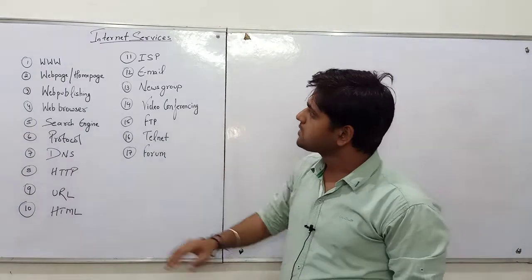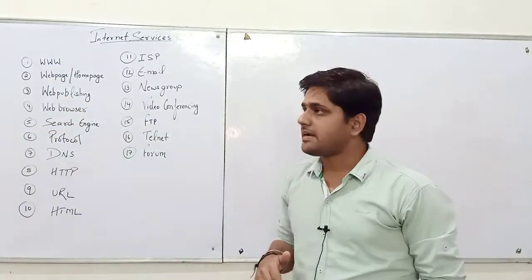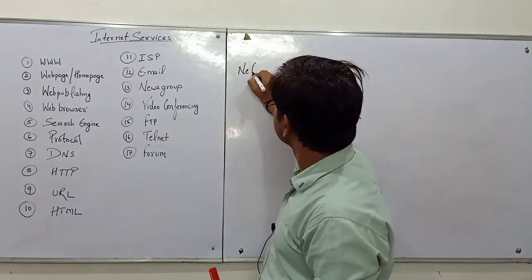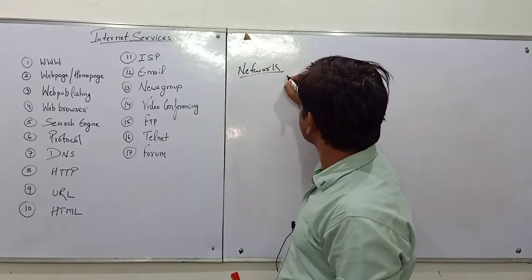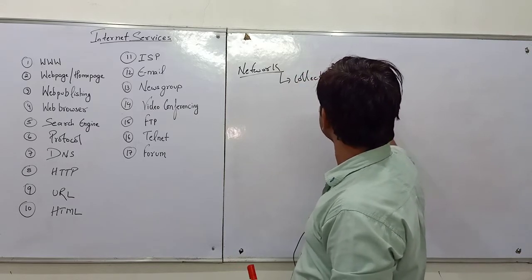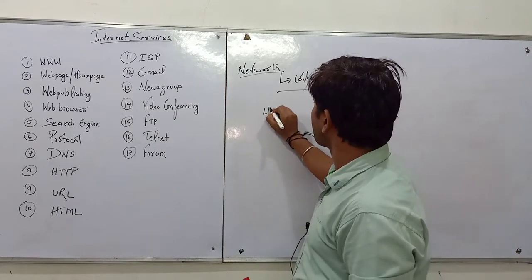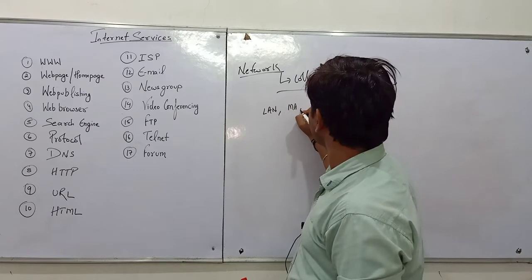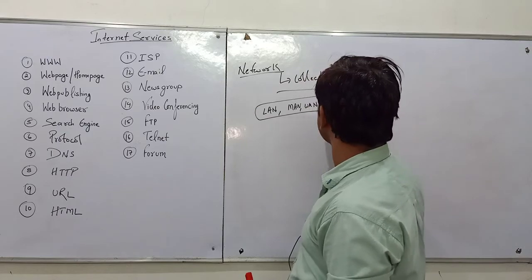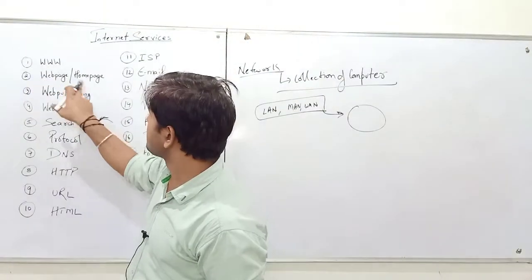Some people feel confused that World Wide Web is also known as the internet, but it is actually a service given by the internet. As discussed in earlier lectures, a network is a collection of computers. When small LANs and MANs are connected to form a network placed all over the world, it forms the World Wide Web.